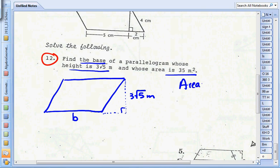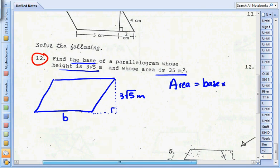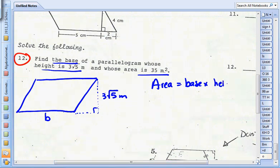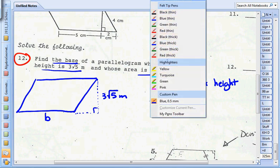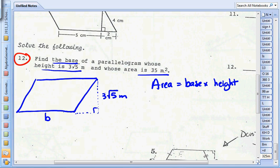Got the diagram, now the formula. Area of a parallelogram equals the base times the height or the altitude. There's the formula. Fill in the info I'm given. They give me the area, that's 35. They don't give me the base, I chose the variable b to represent the base, and they give me the height, 3√5.